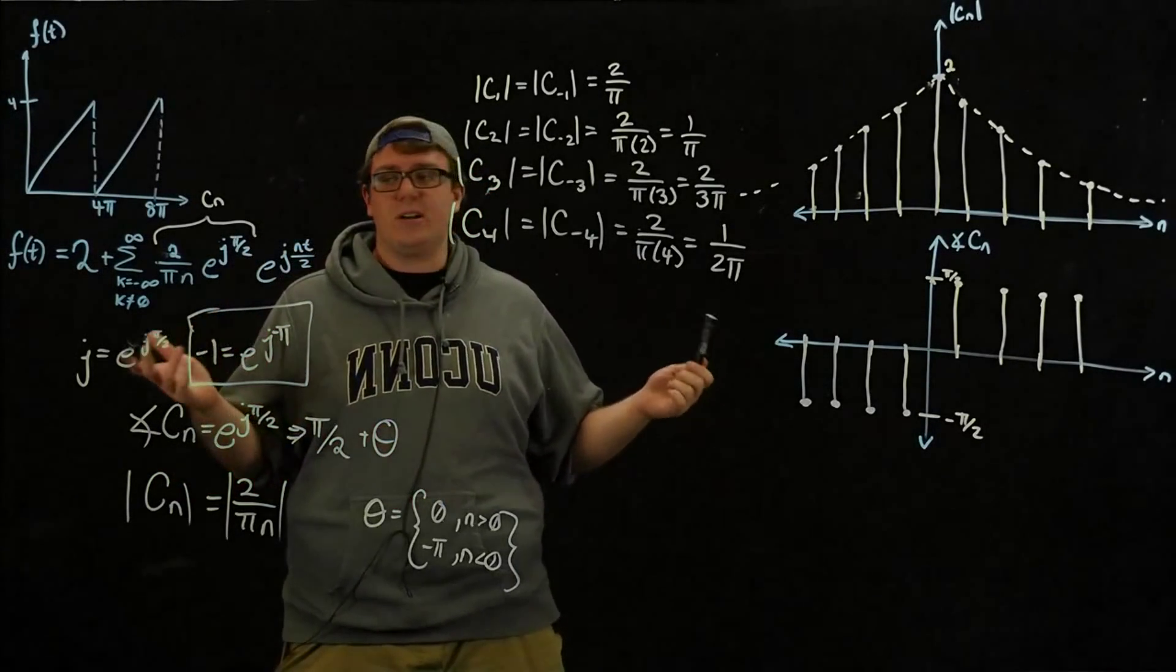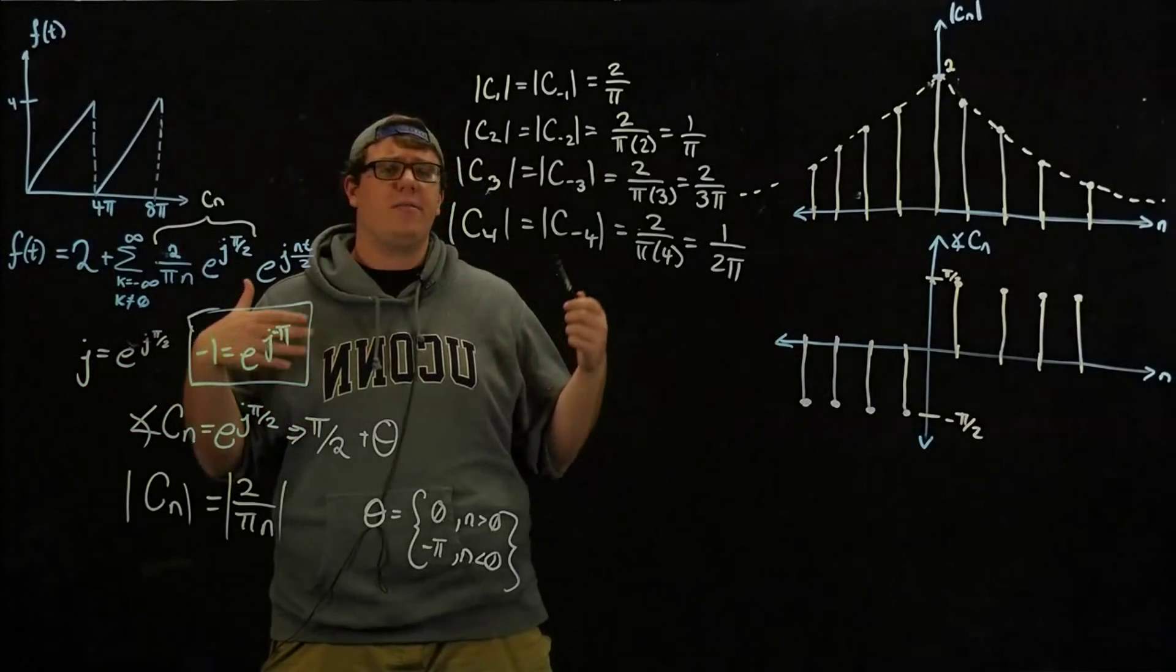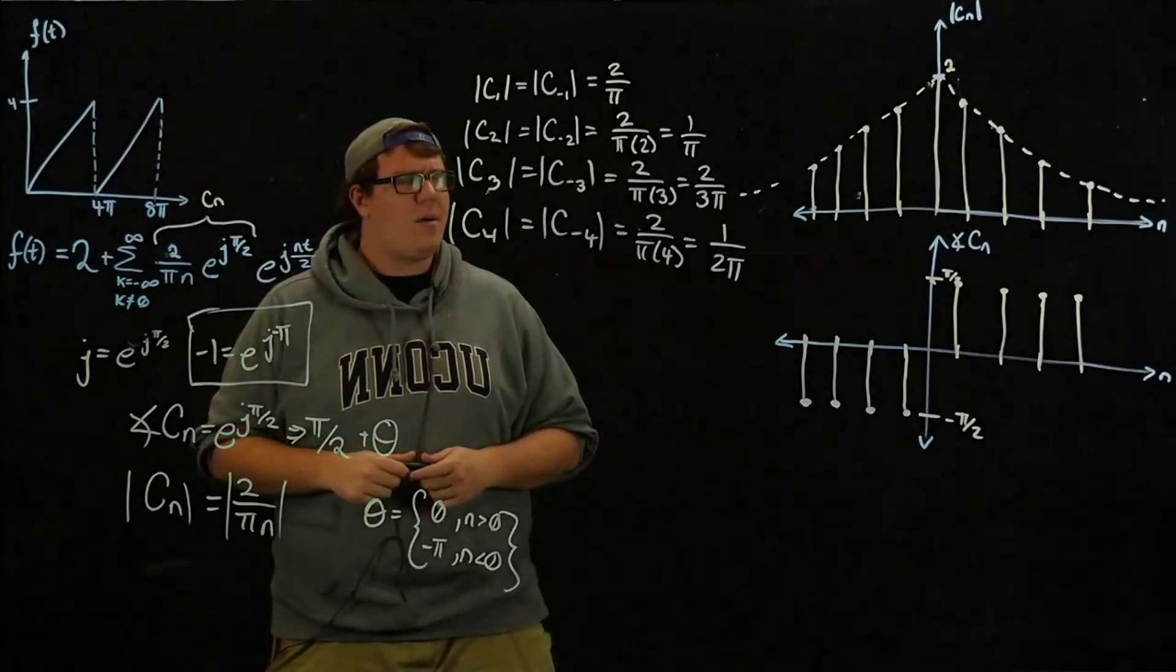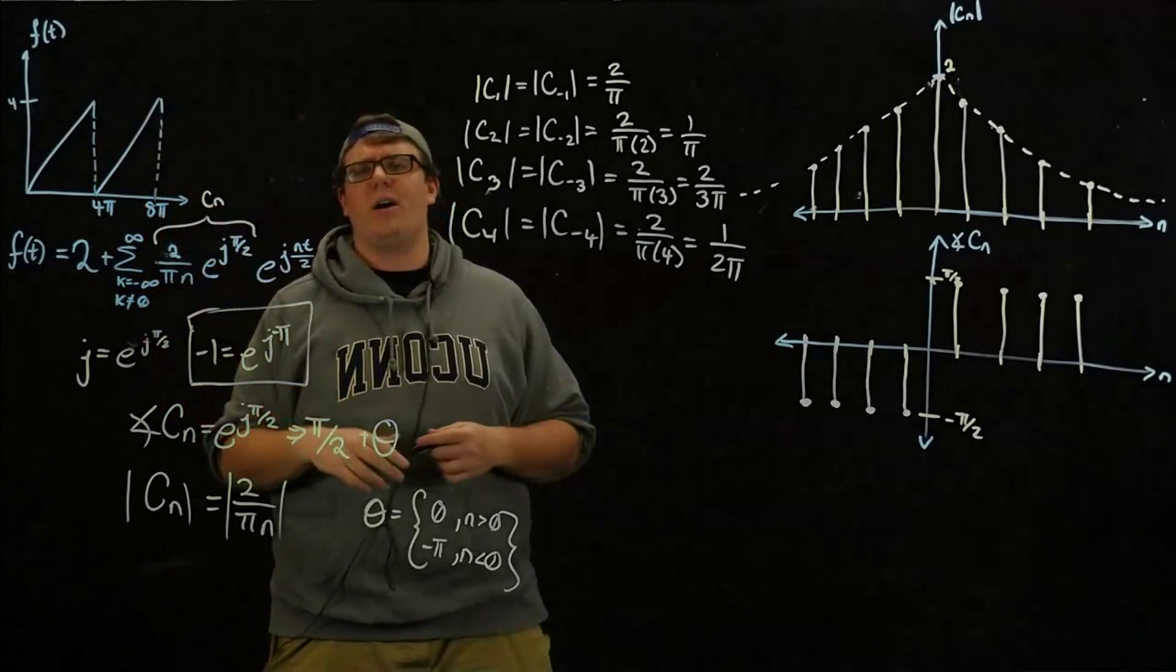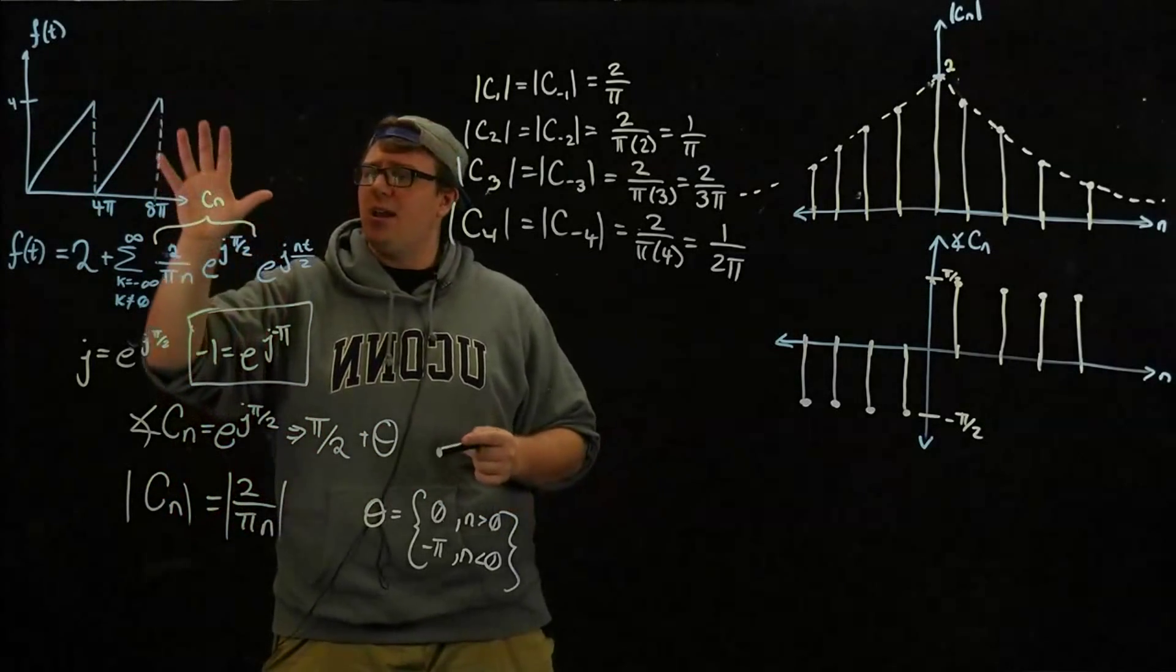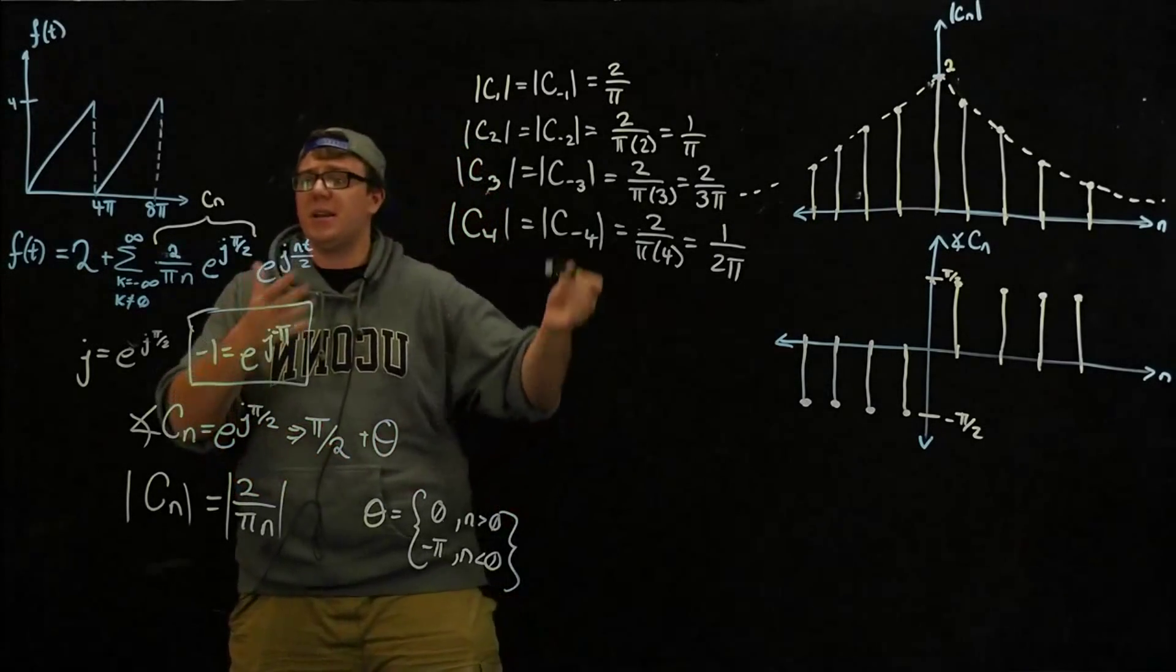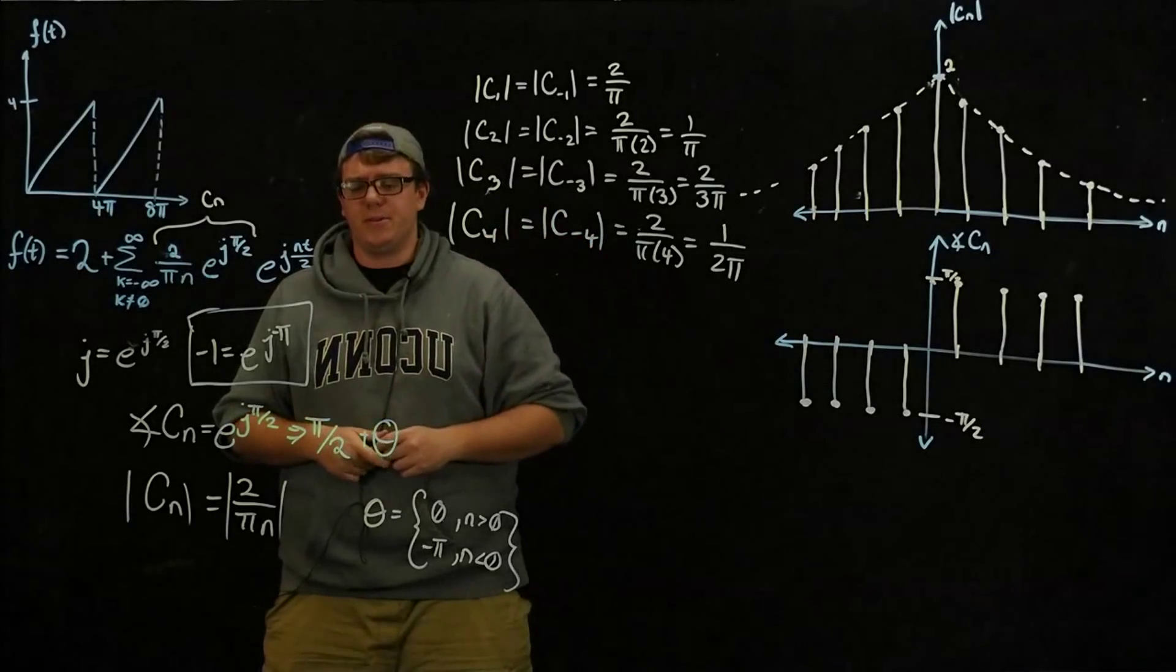So if you were to low pass filter this wave function, you would still maintain a general idea of what's going on with this wave. You would lose some of the sharper edges, but you would still get mainly this wave. If you were to high pass filter it, you probably would lose a lot of the information here, if that makes sense. Because most of the information, most of the energy is stored at lower frequencies.